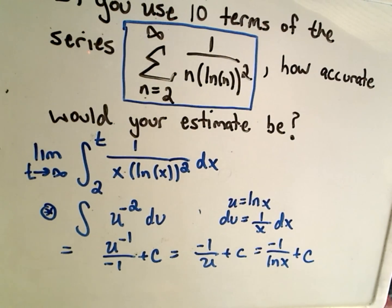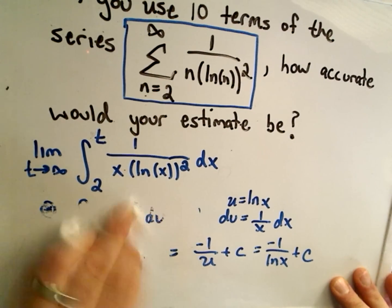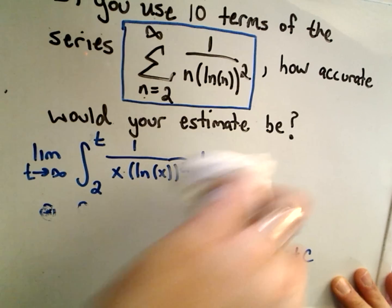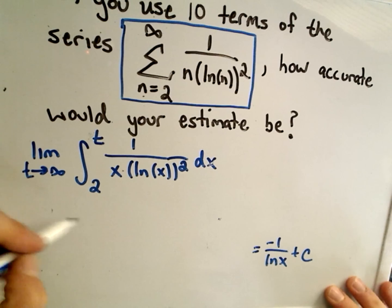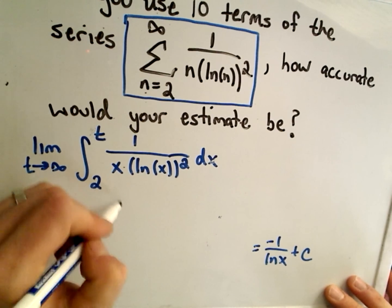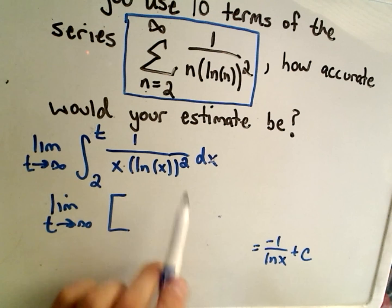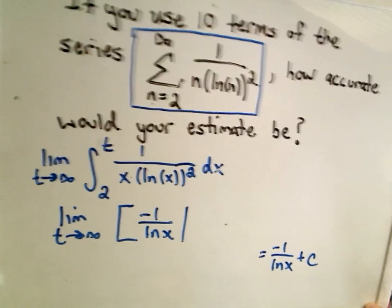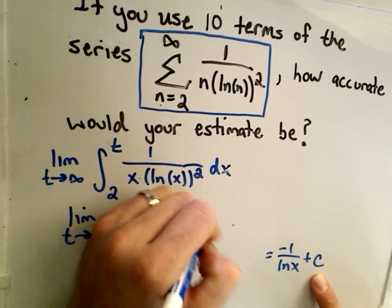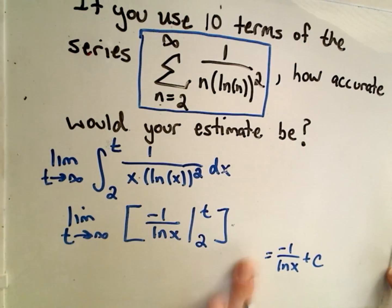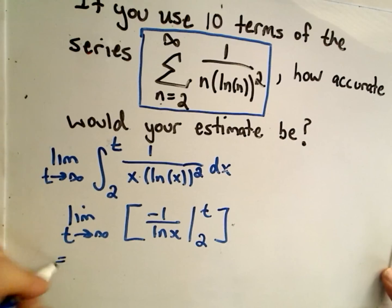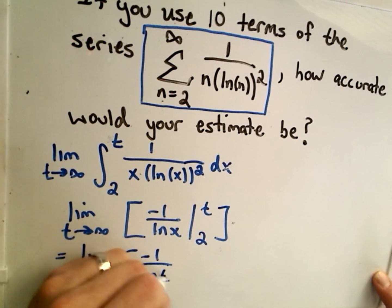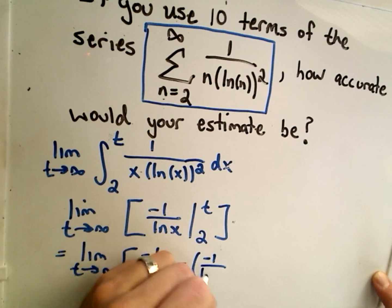So when we evaluate the definite integral, we take the limit as t goes to infinity. Integrating 1 over x ln(x) squared gives us negative 1 over ln(x). For definite integrals we drop the arbitrary constant, and we evaluate this from 2 to t, giving us the limit as t goes to infinity of negative 1 over ln(t) minus negative 1 over ln(2).